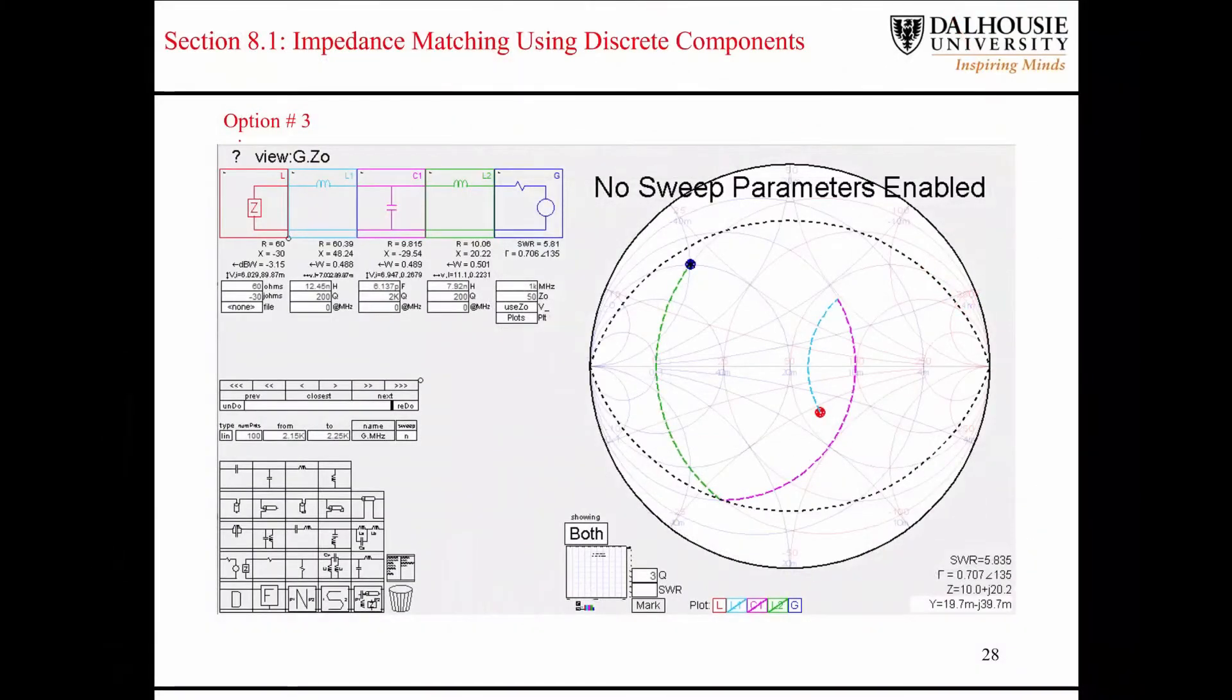Here's another route, option 3. We can rotate up using a series inductor, then we can rotate downward like this using a shunt capacitor, and then we can rotate up to our target impedance using another series inductor like this. So this would be option 3.